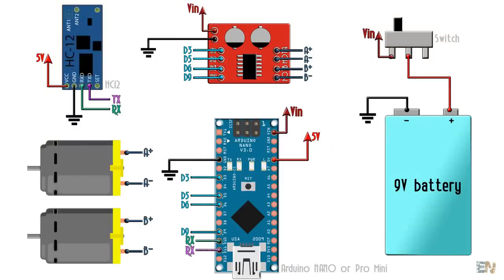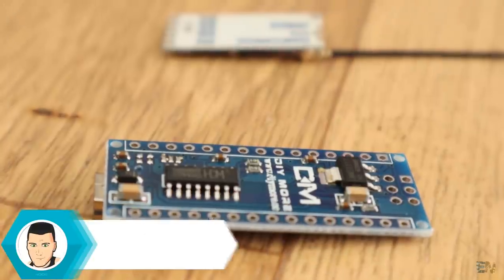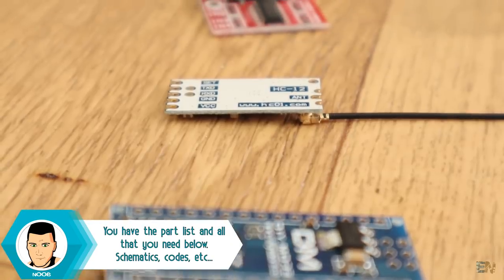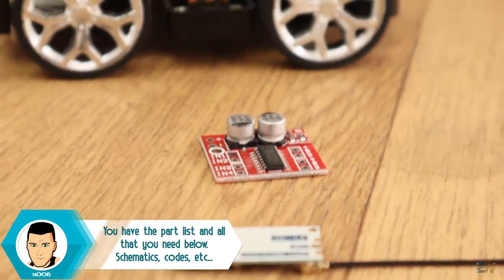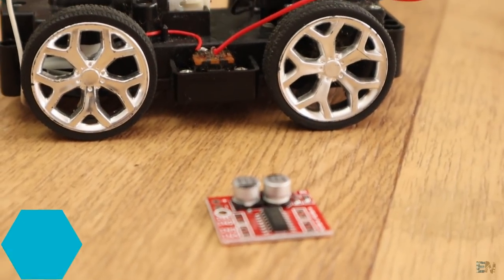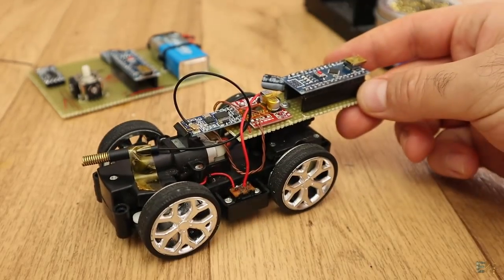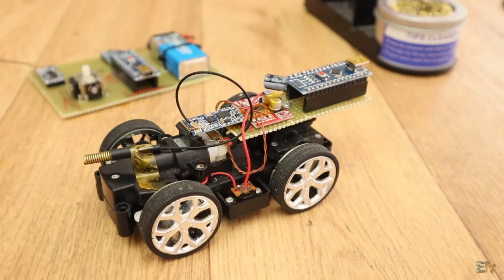This here is a copy of the L298 H-bridge module but it's a little bit smaller. It could withstand up to 1.5A and could control two motors. So this is the schematic for the receiver. We need once again the Arduino, the other HC12 radio module, the H-bridge and the motors.